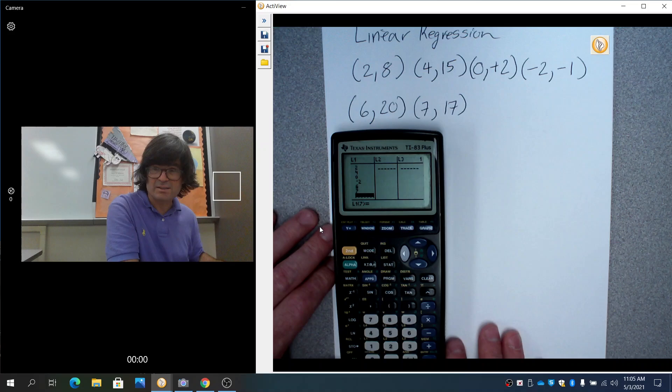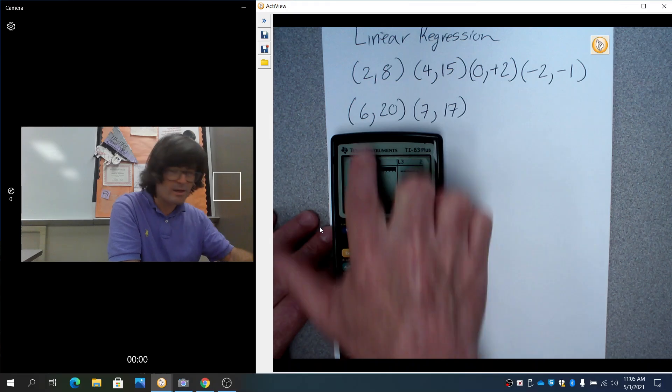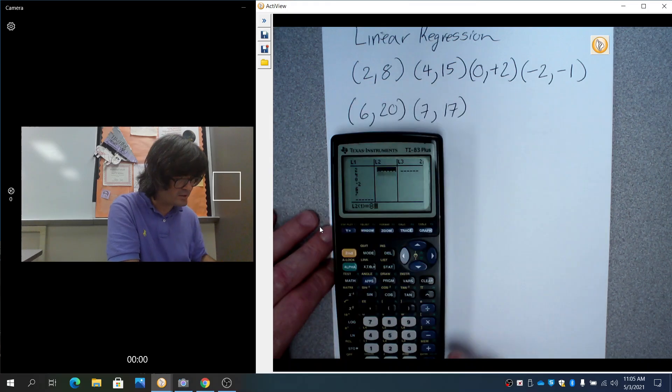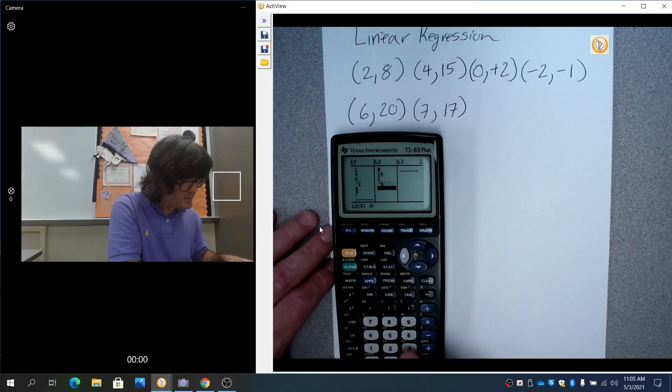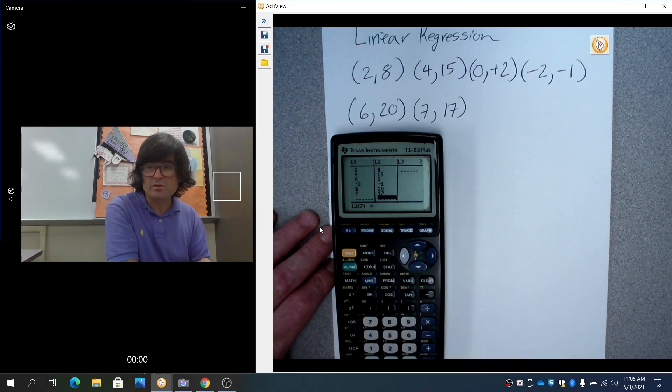Then 4 ENTER, 0 ENTER, negative 2 ENTER, 6, and then last is 7. So those are all my x's. When you do the y's you have to make sure and keep the order the same. 2 and 8 go together, so you'll do 8 in list two right across from the 2, then 15, and 2, then negative 1, and then 20 and 17.